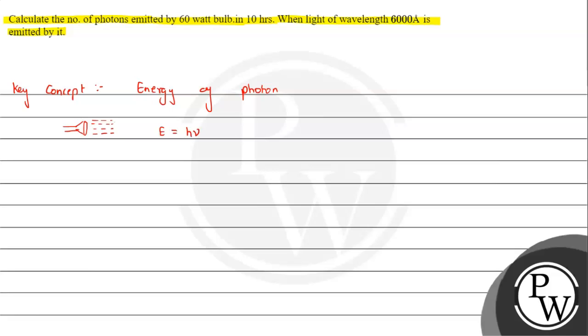...is given by the expression h times ν, where h is Planck's constant and ν is the frequency. Frequency in terms of wavelength we can write as c over λ. So this is the energy of a photon.